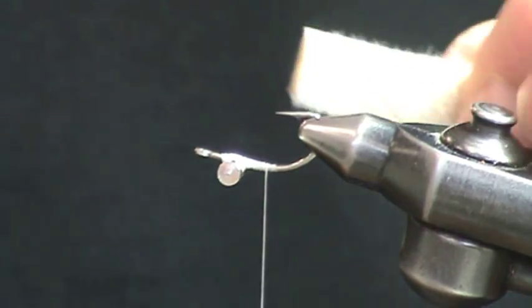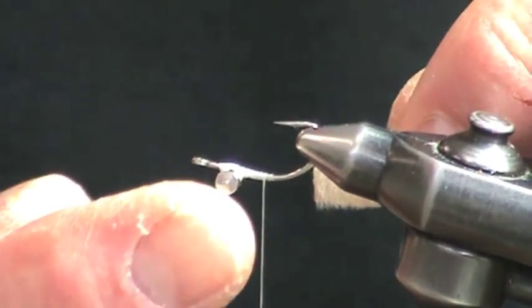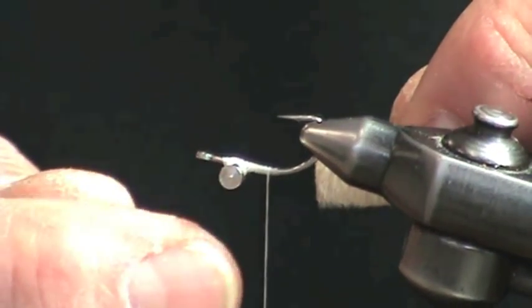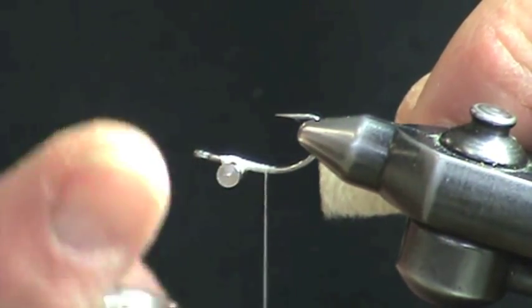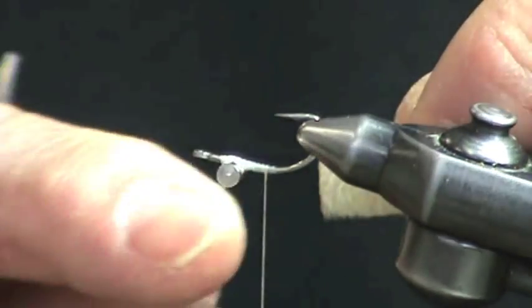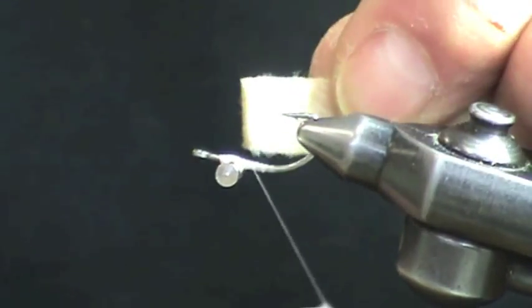It's very easy to tie, durable, and it works. Simply take some furry foam after you've created a foundation with your lead eyes, or eco-friendly eyes if you will, bead chain eyes, whatever you want to use for eyes on the front part of the hook.